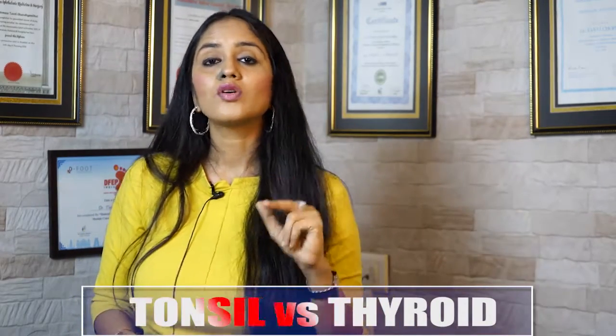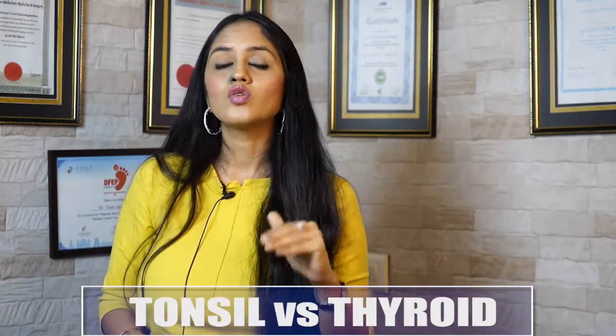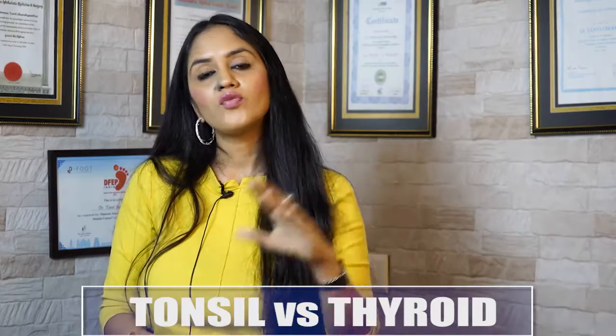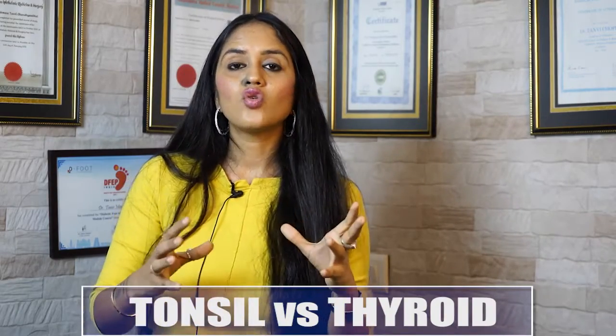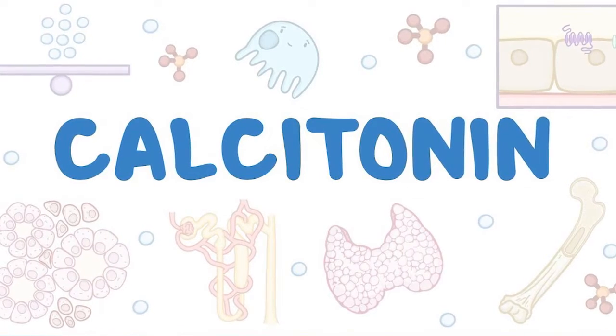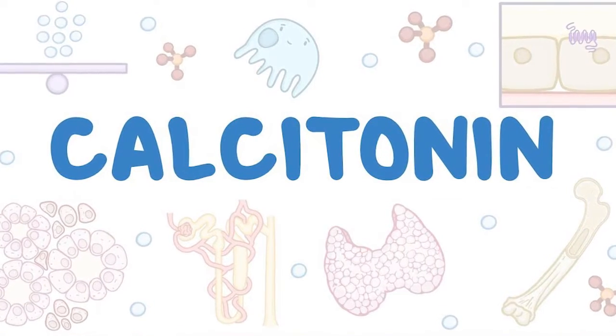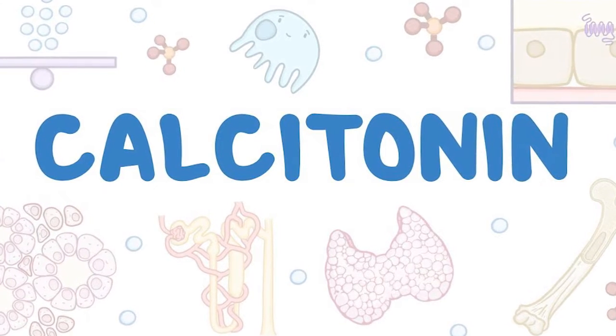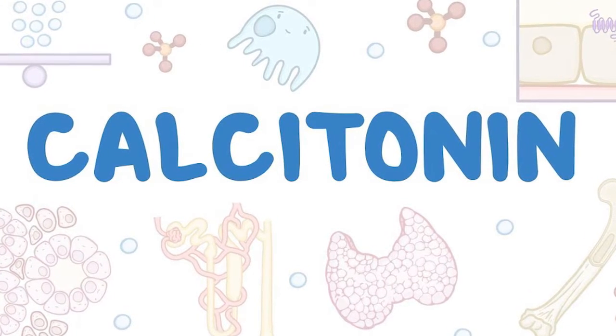This thyroid gland secretes two important hormones called T3 and T4. Both of these hormones control our general body metabolism. Besides that, the thyroid also makes another hormone called calcitonin, which controls our calcium level in our body, and that indirectly helps in our bone development as well.